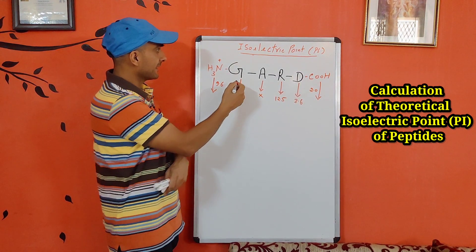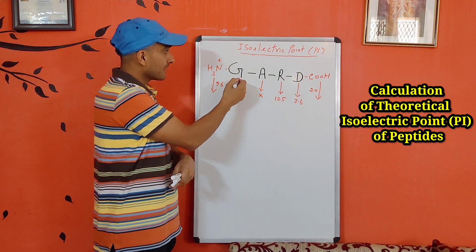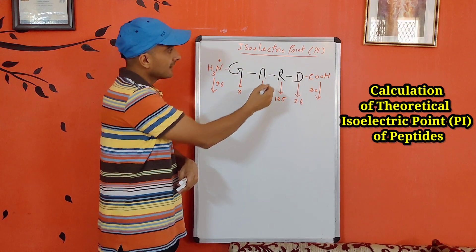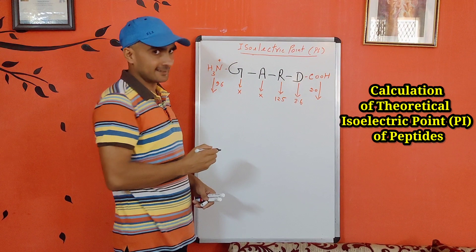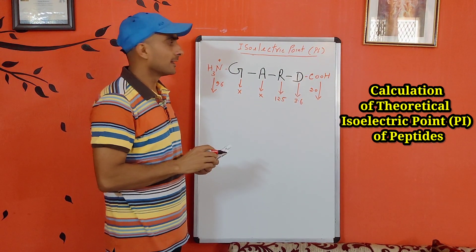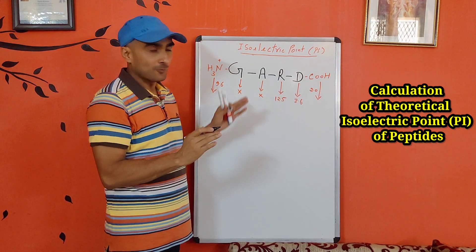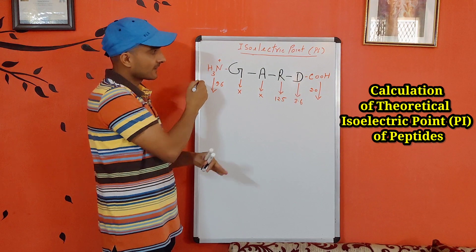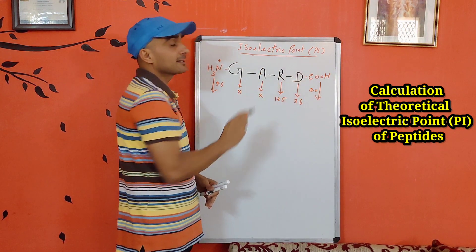The example is the tetrapeptide GARD, where glycine is the first amino acid, alanine is the second, arginine is the third, and aspartic acid is the fourth. In peptides or proteins, the N-terminal has a free amino group, and at the C-terminal the carboxyl group is free.